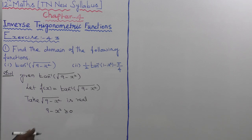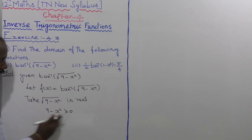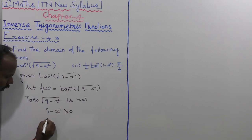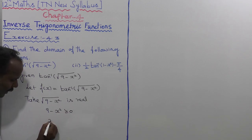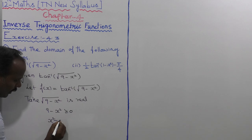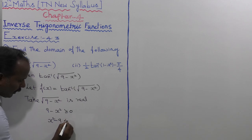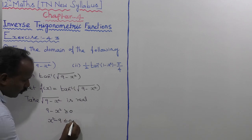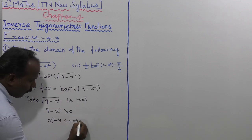Next, multiplying both sides by minus 1, that gives x squared minus 9 is less than or equal to 0, which implies x squared is less than or equal to 9.